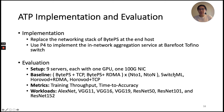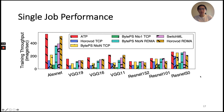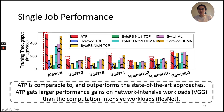We implement ATP as a bypass plugin by replacing the networking stack at the end-host, and use P4 to implement the in-network aggregation service at the Barefoot Tofino switch. We evaluate ATP on a multi-machine cluster and compare against various state-of-the-art approaches across a variety of ML models, focusing on training throughput and accuracy. Comparing ATP against all baselines for different models in a single-job case, the main takeaway is that ATP is comparable to and in many cases outperforms state-of-the-art approaches. ATP also gets larger performance gains on network-intensive workloads like VGG than on computation-intensive workloads like ResNet.